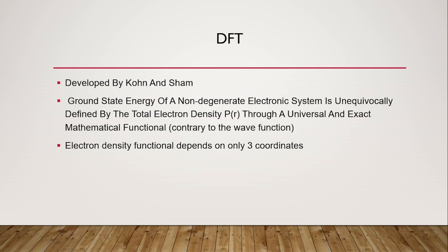In DFT, you depend on the electron density functional, so you don't need 3N coordinates. If you have N atoms, you only need three coordinates — x, y, and z — because electrons are not considered individually; we consider the electron density functional. Therefore, DFT is a simplified version of ab initio, depending on only three coordinates whereas ab initio depends on 3N coordinates.